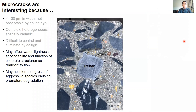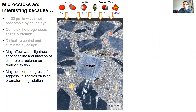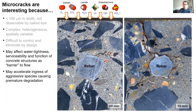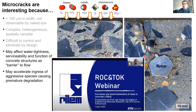In addition, microcracks could act as pathways for aggressive species, increasing the transport properties of the concrete cover beyond what we would normally expect for well-designed concrete, which could then accelerate deterioration leading to premature failure. For example, reinforcement corrosion is accelerated by ingress of chloride or carbon dioxide through the concrete cover in the presence of moisture and oxygen at the steel-concrete interface. The fundamentals of corrosion of steel in concrete were nicely presented in the previous Rock and Talk webinar by Professor Uli Angs, which I would highly recommend.